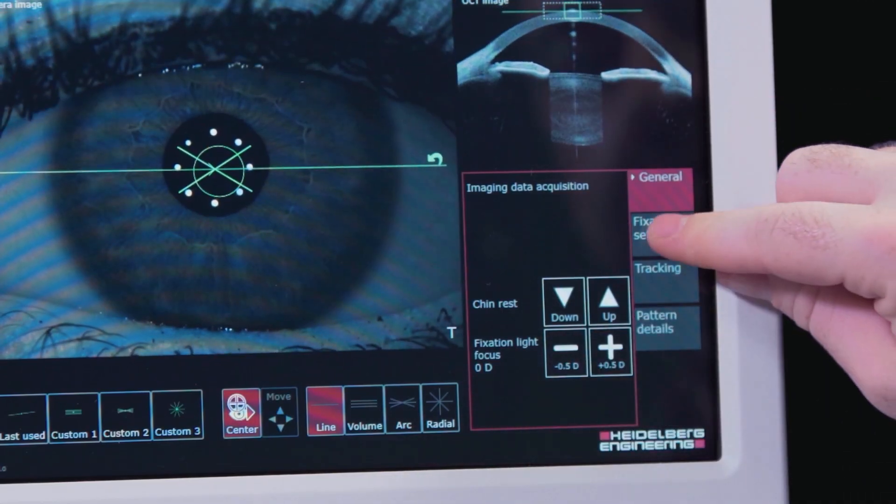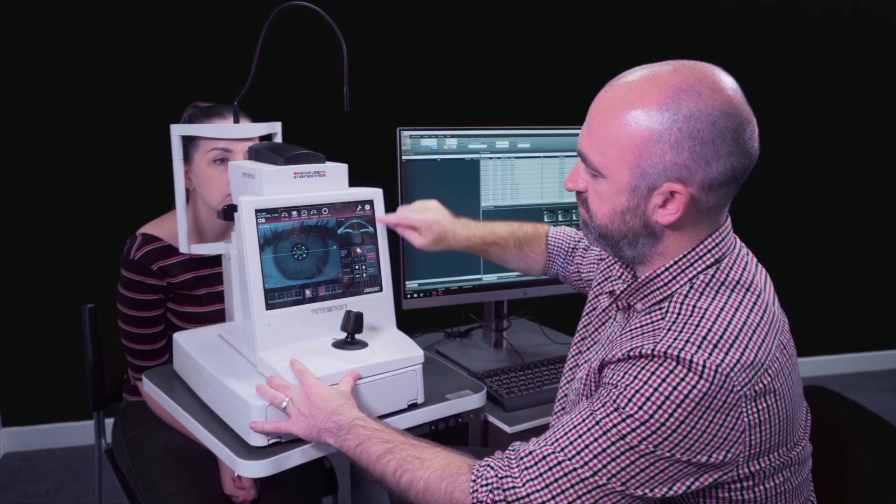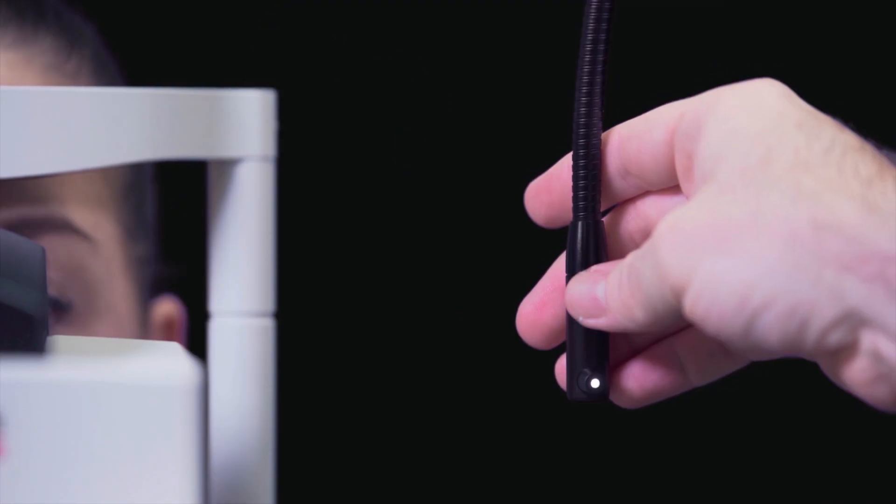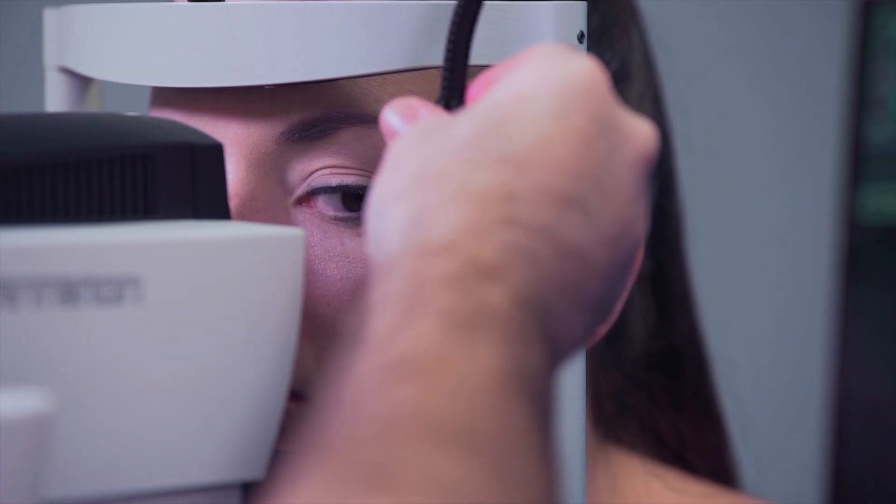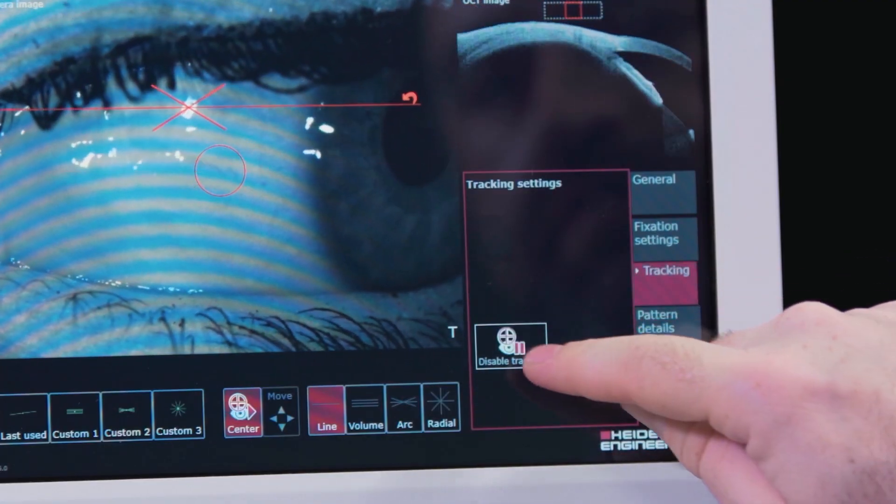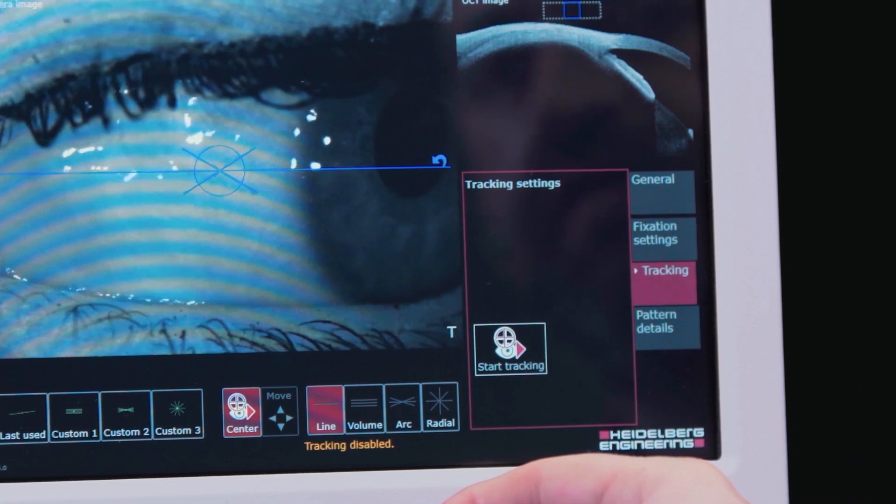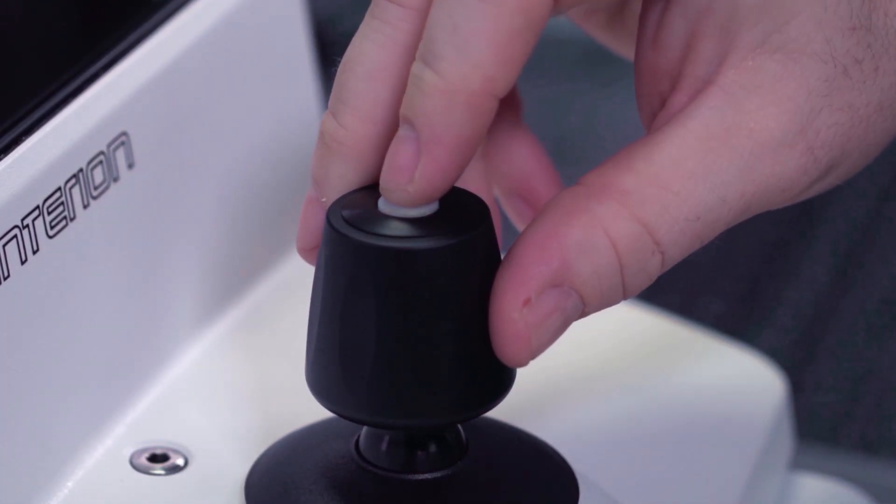To acquire images of paracentral structures, the external fixation must be used. Position the external fixator until the structure you wish to image is correctly displayed. With tracking disabled, you will notice the scan line is blue. Acquire the image by pressing the joystick button.